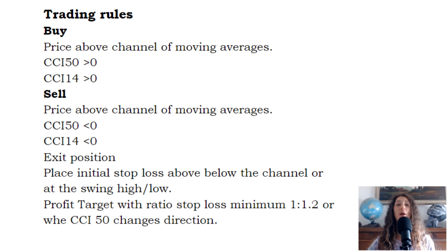Exit position: place initial stop loss above or below the channel or the swing high/low. Profit target with a ratio to stop loss minimum 1 to 1.2, or exit when CCI 50 changes direction. Now let's look at some examples of trades.